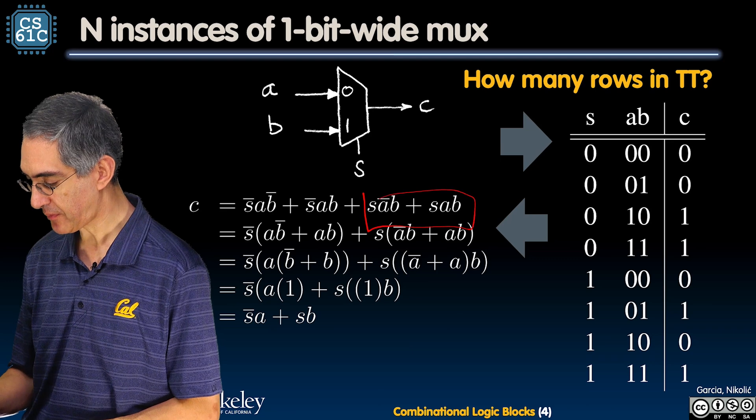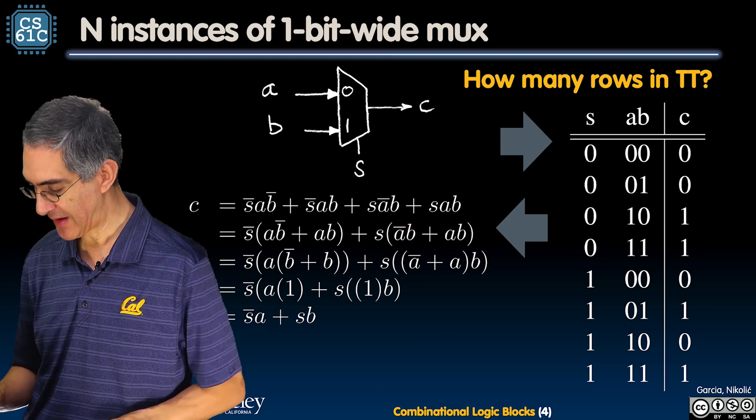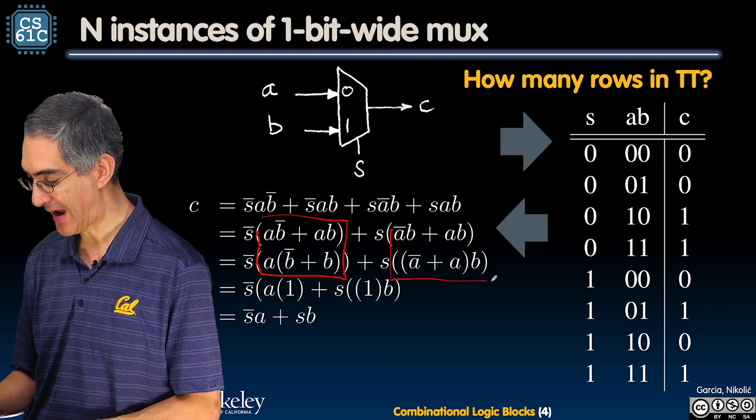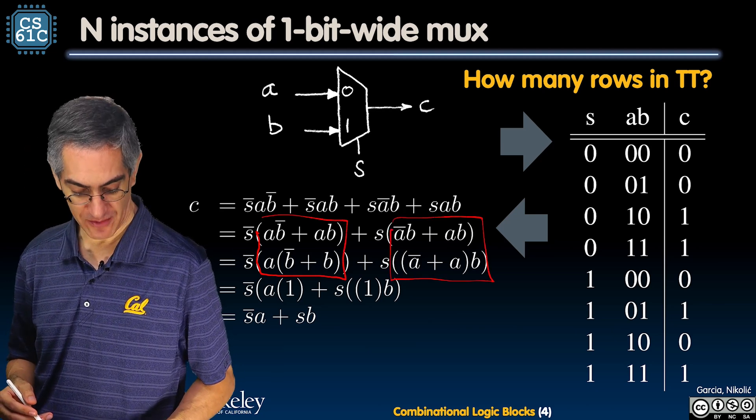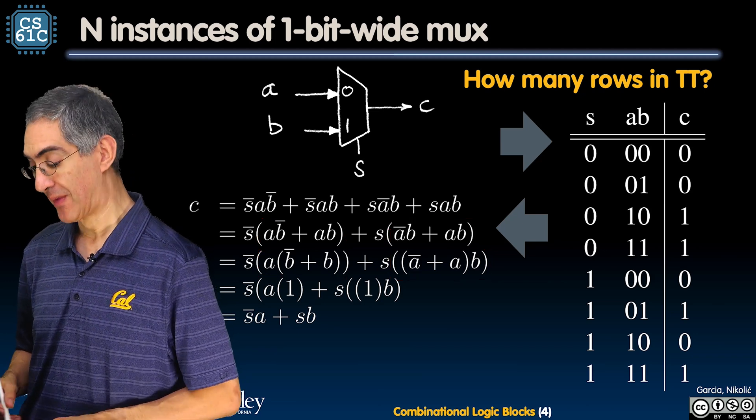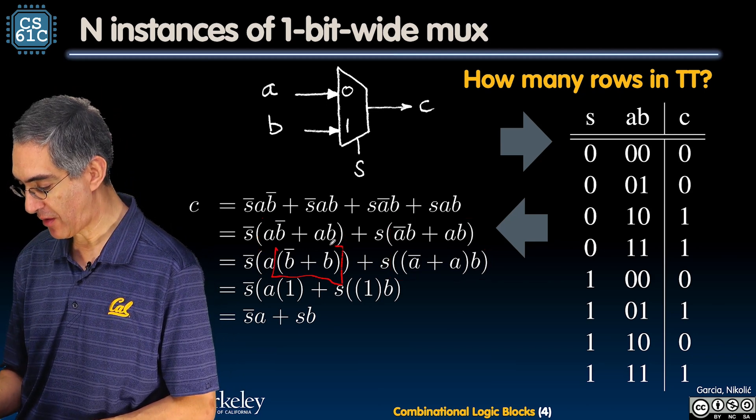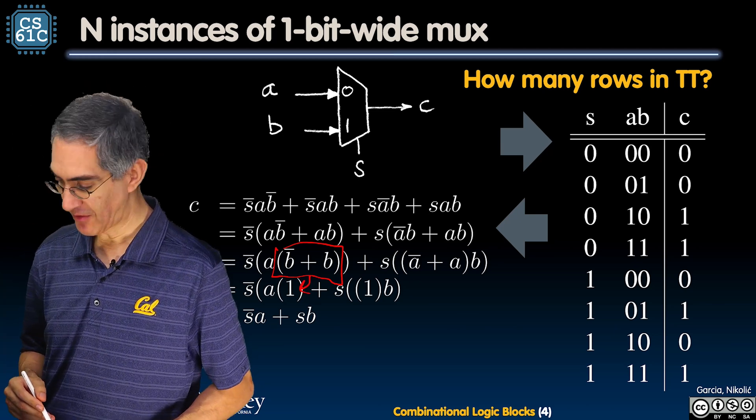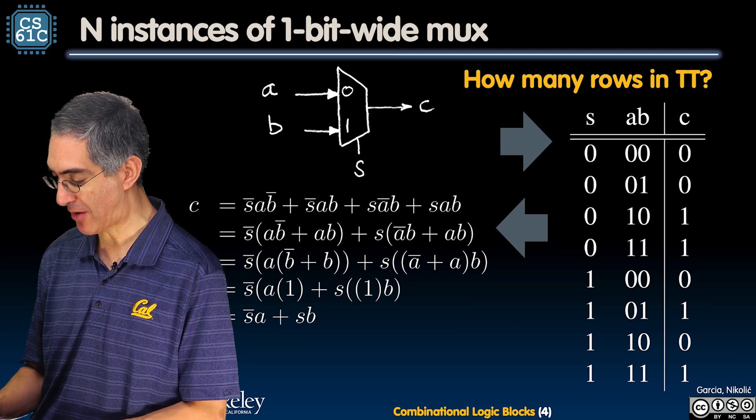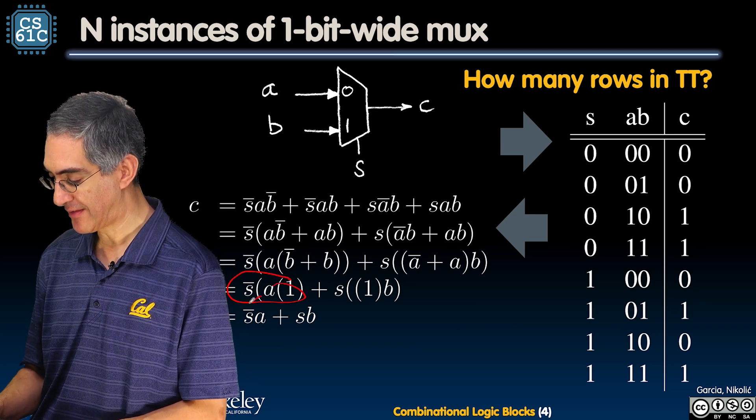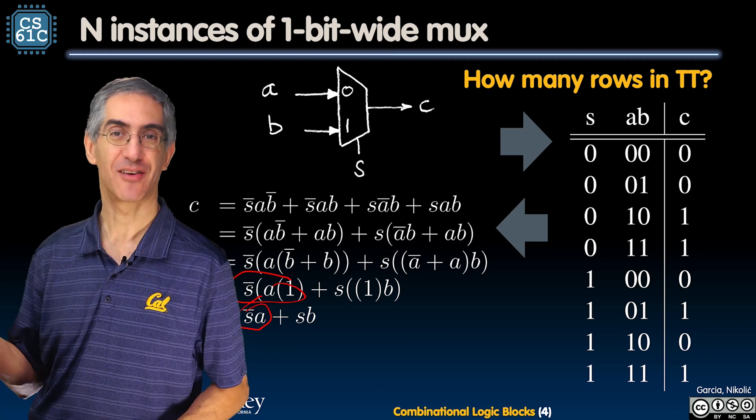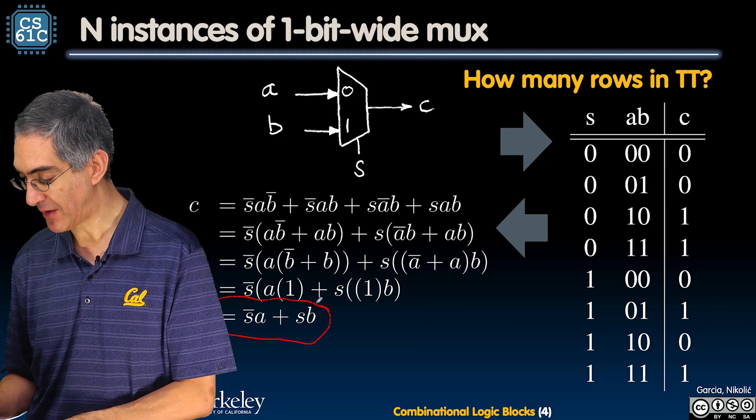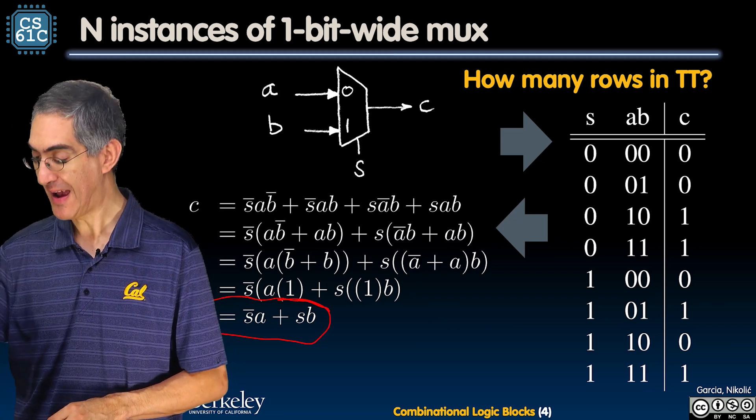And how about this inner term? How do you go from there to there? This is the same thing. I'm just reverse distributing out A and B out of that term. Well, how about this one? What's this one? Remember this one? What's this? B or not B? Yeah, the law of complementarity. So that tells me that's 1. Now, how about this? How do you go from here to here? That's the identity property. Because you remember that, hopefully you remember that from algebra. Yielding is really simple. Not S, A, or S and B.